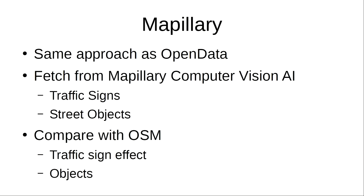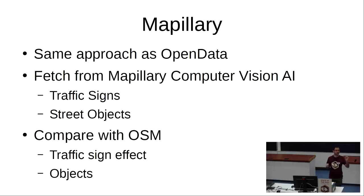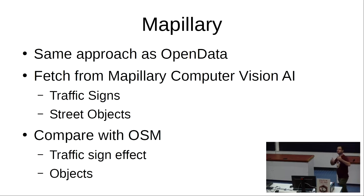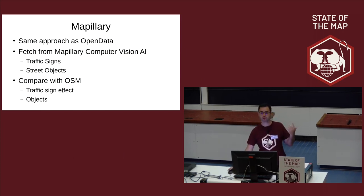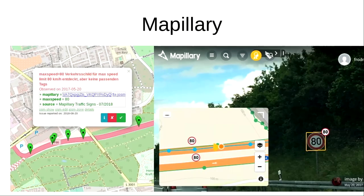What about Mapillary in this? Mapillary detects objects — traffic signs — from pictures using AI. So it's like an open data set: there is data on the web and we can compare it with OpenStreetMap. We can compare where a traffic sign indicates a speed limit against whether that limit is reflected in the maxspeed tag. The same applies to objects like benches, lights, and traffic lights. We get issue points where photos were taken and objects detected, which suggest tags to add. We can view the source Mapillary photo and see the detected traffic sign to verify the picture content.